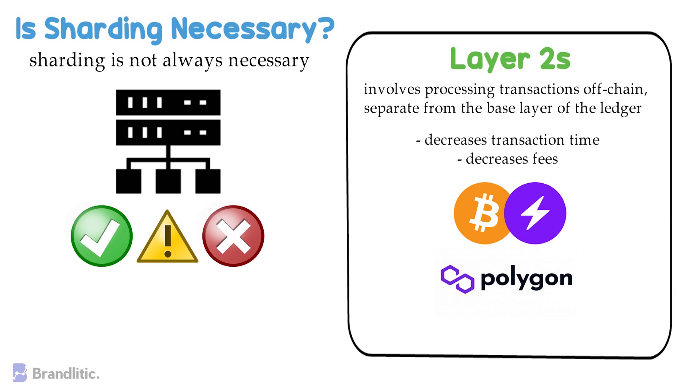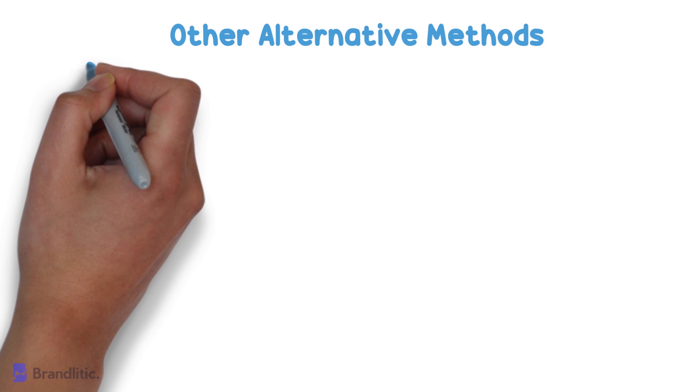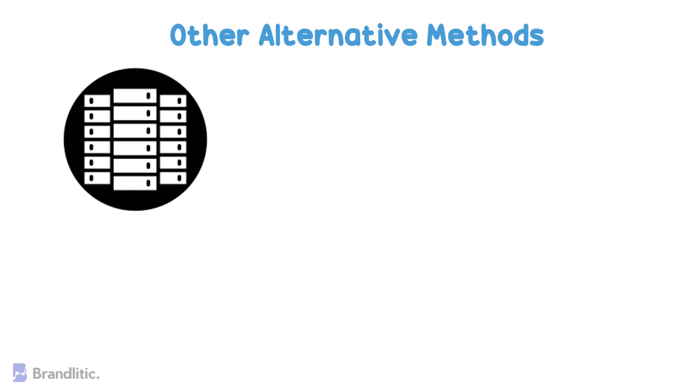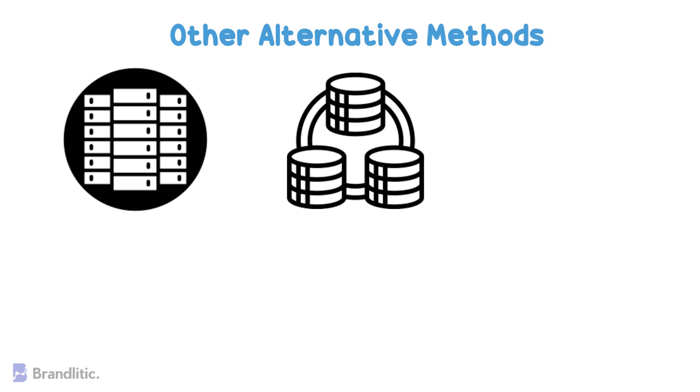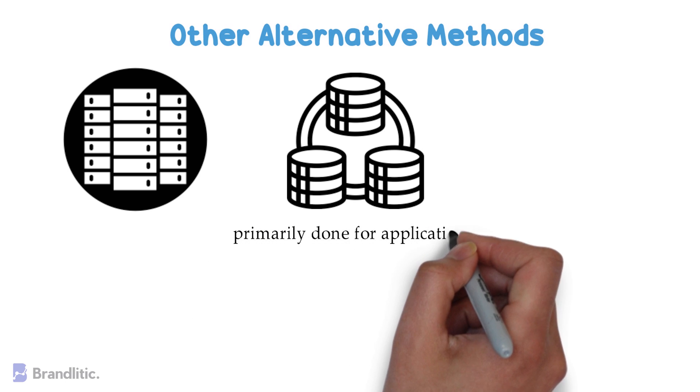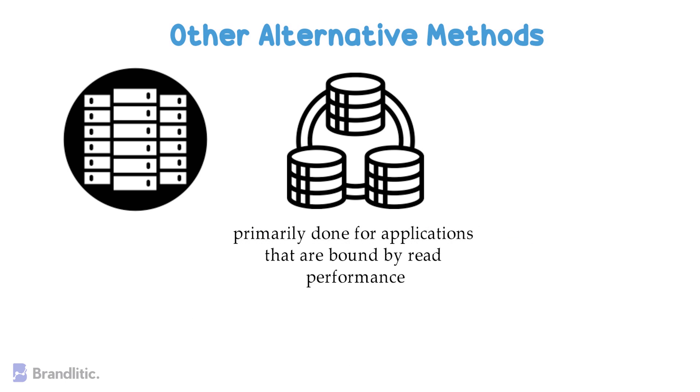Another example is Polygon or MATIC on the Ethereum network. In simple terms, Polygon does for Ethereum what Lightning does for Bitcoin. But if Ethereum successfully changes to Proof-of-Stake and implements sharding, which will be the launch of Ethereum 2.0, then Layer 2s like Polygon could become obsolete. Further, other alternative methods that come in as handy solutions if you want to solve blockchain scalability issues include getting a more expensive and powerful computer or simply adding caches or database replicas to the network. But note that this is done primarily for applications that are bound by read performance only. And lastly, a database can also be vertically partitioned to increase its performance according to its functionality.